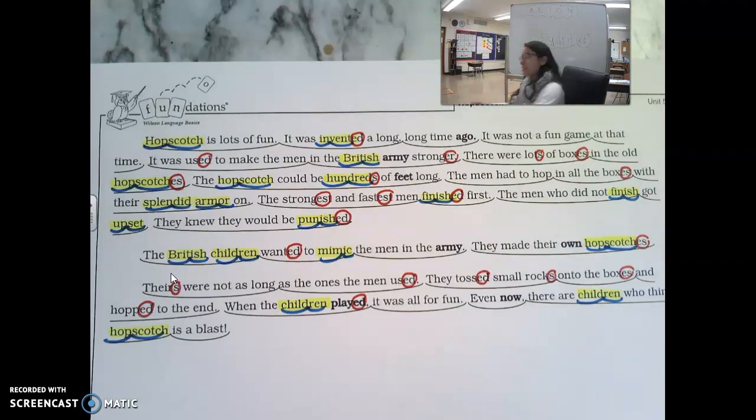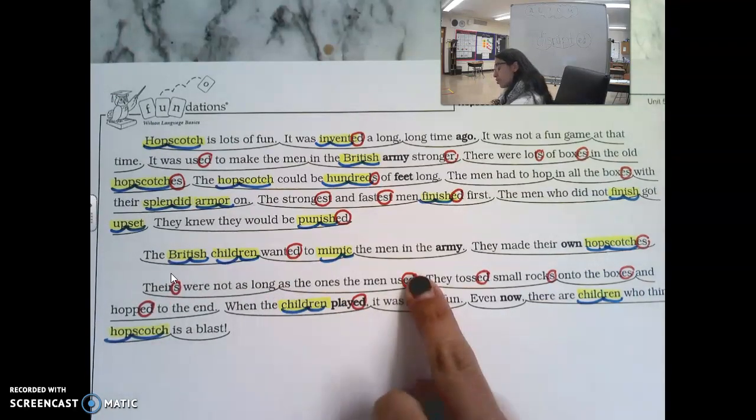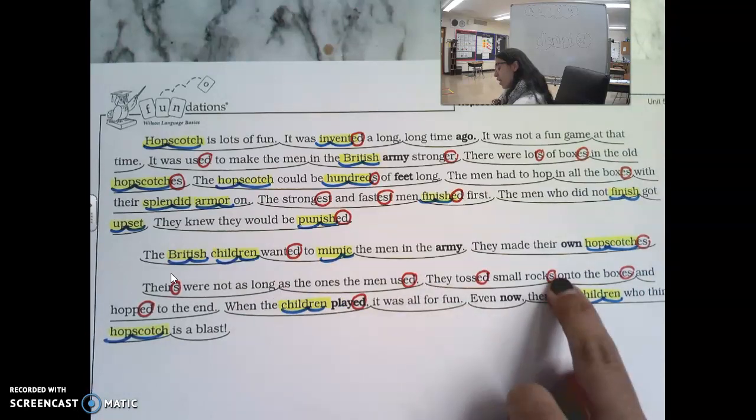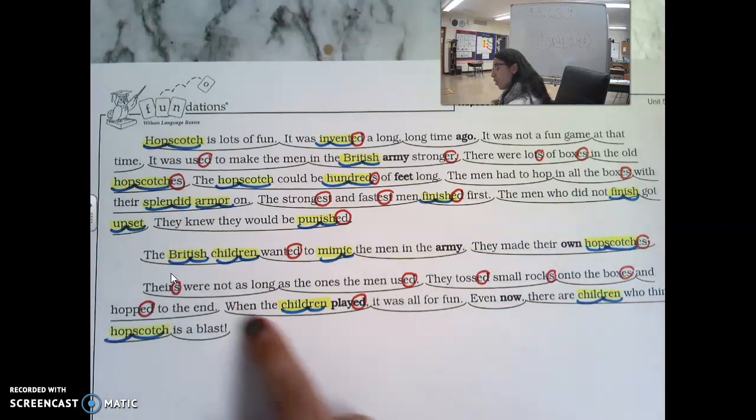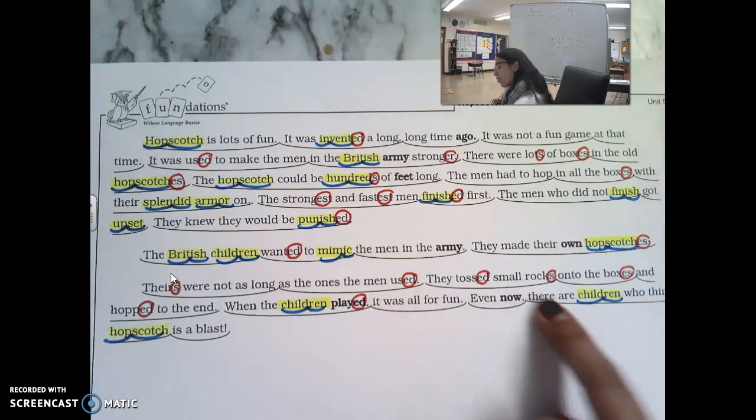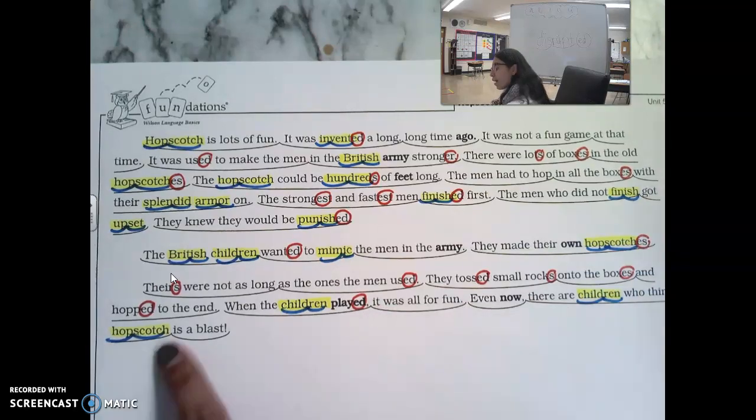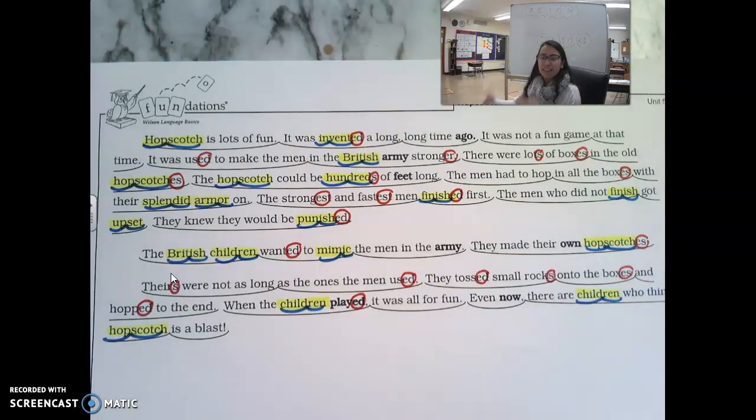Let's look at the next sentence. Theirs were not as long as the ones the men used. They tossed small rocks onto the boxes and hopped to the end. When the children played, it was all for fun. Even now, there are children who think that hopscotch is a blast. I just read that this was a game that kids created to copy soldiers and it was all just for fun. Oh, that's awesome.